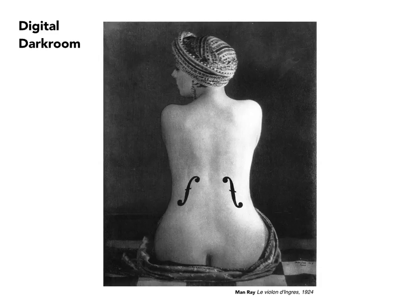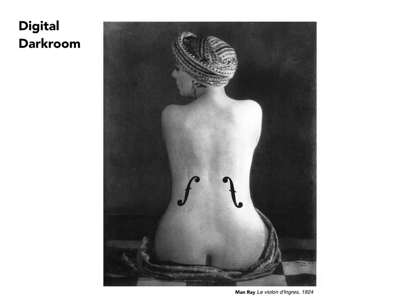Man Ray was an artist who didn't feel that kind of constraint and often manipulated his imagery, and also often did it very simply. In this case, he took one photograph of the back of a woman and exposed that to photographic paper. Before processing it, he then exposed it a second time to an image of the F-holes in a violin, with the intention of playing up the similarities between the female form and the violin.